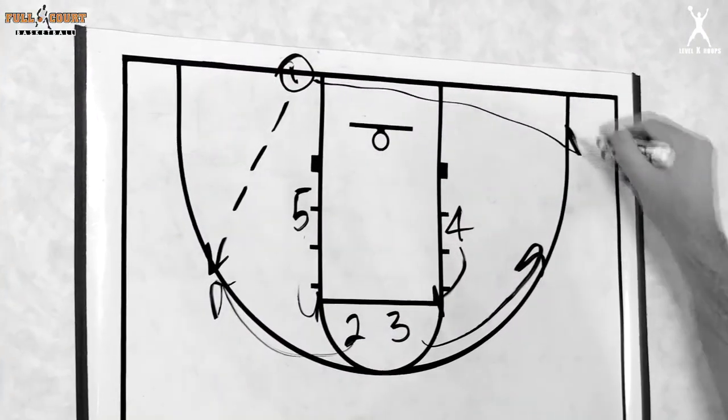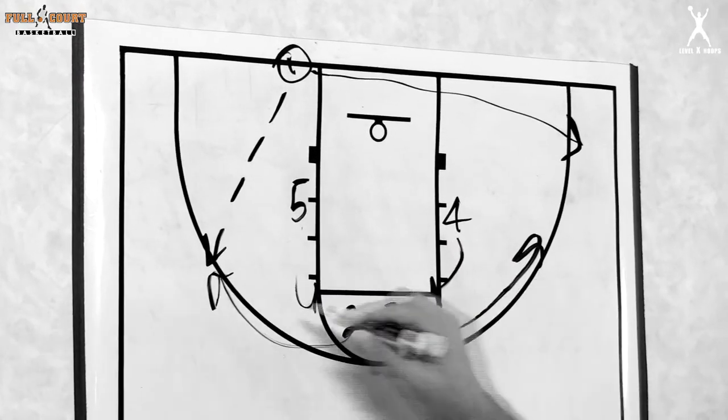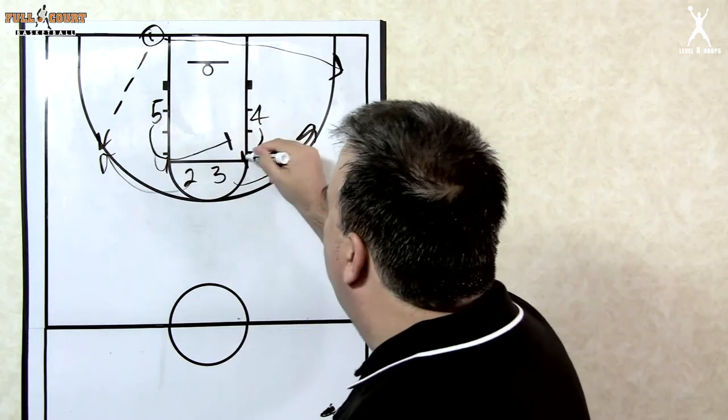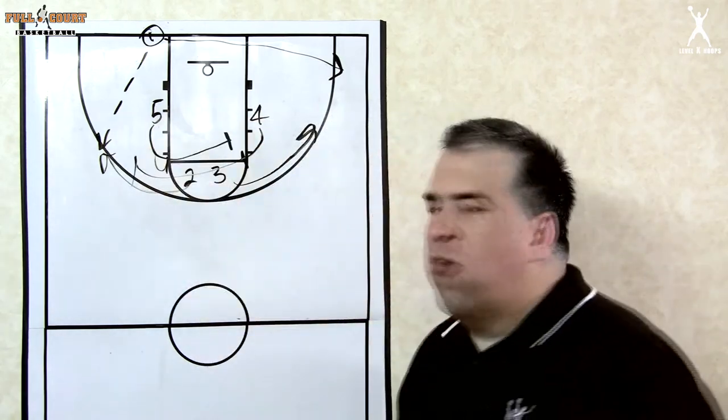In this situation, one's going to go opposite of the ball and now we're going to set up a side screen situation with either five sprinting out to screen or five screens for four and four sprints into the screen and sets the ball screen.